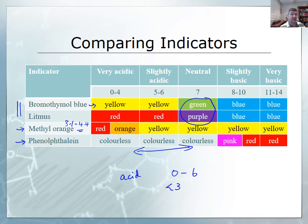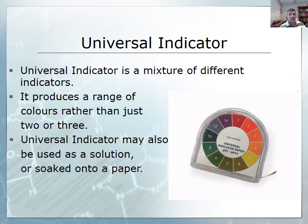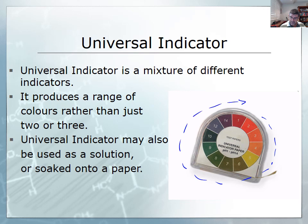Sometimes you'll be given tables like this to compare different indicators and draw conclusions about the pH of different solutions. Another way to do that is to use universal indicator, which is actually a mixture of different indicators that show a range of different colors, making it much more accurate. We can use color matching around the indicator color wheel to make conclusions about the concentration of an acid or base, from very strong acid to very strong base.